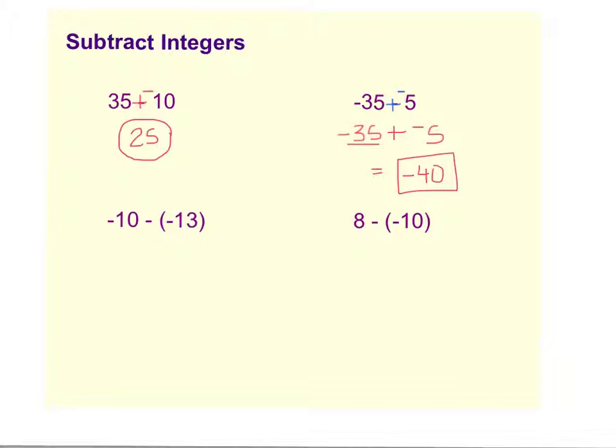Alright, let me go back to add op on this next example. We have negative 10 minus negative 13. So add op would tell us to you always leave the first number alone but this subtraction we're going to add, so there's our plus and then op, we have to do the opposite of negative 13 so that becomes a positive 13.